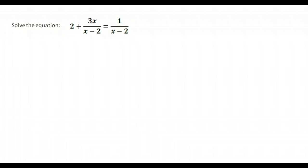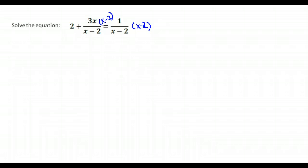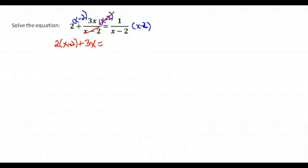This example has X minus 2 in the denominator in two separate places. The denominators are X and X minus 2, so multiply everything by X minus 2. The goal is to eliminate the denominator. For the first term, 2 times X minus 2 remains; for the second term, X minus 2 cancels and we're left with 3X. On the right-hand side we're just left with 1.